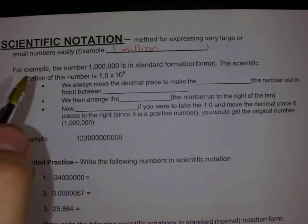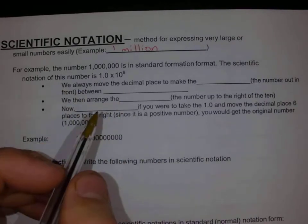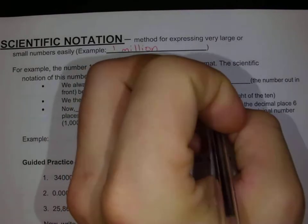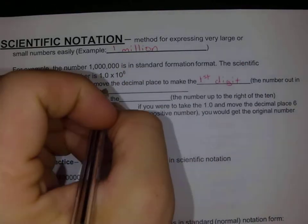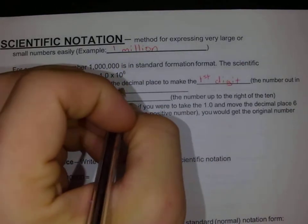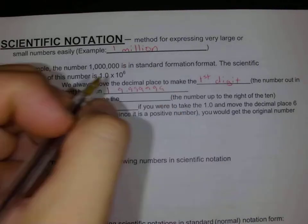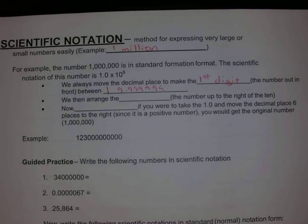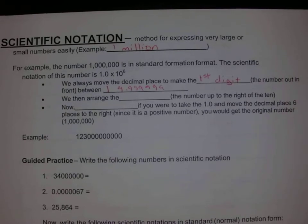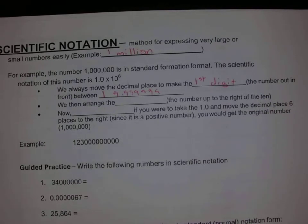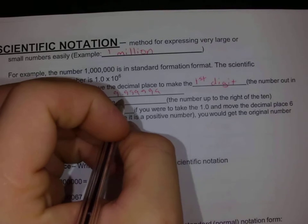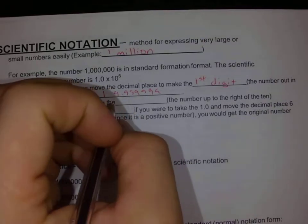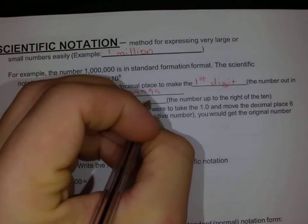What we do for scientific notation is we always move the decimal place to make the first digit be between 1 and 9.999... We don't want two digits ahead of the decimal place — we only want a single digit before the decimal place, so we don't go to 10. Then we rearrange the number and use an exponent.